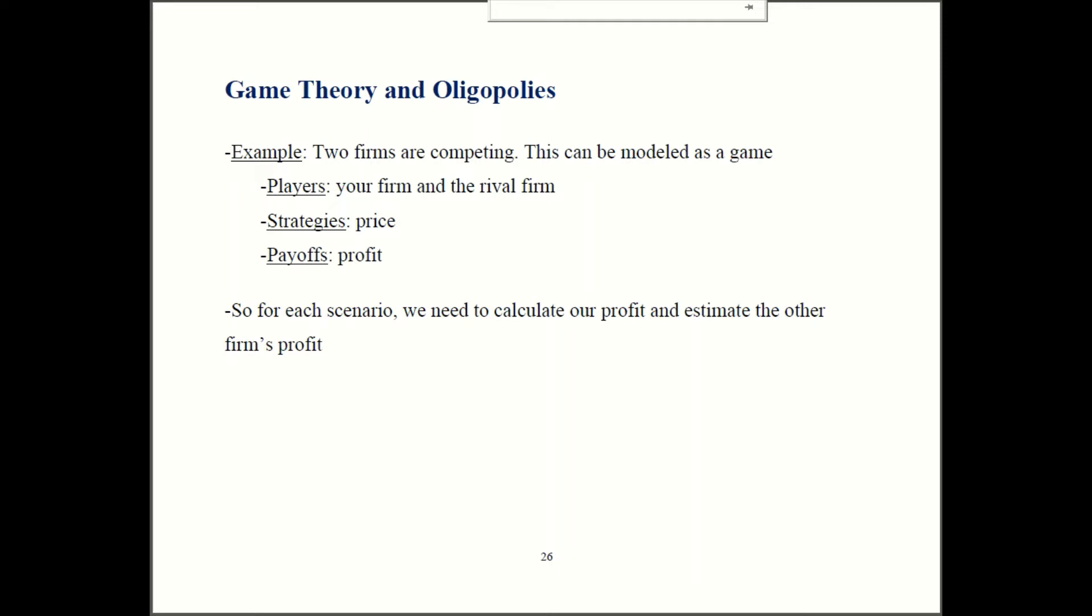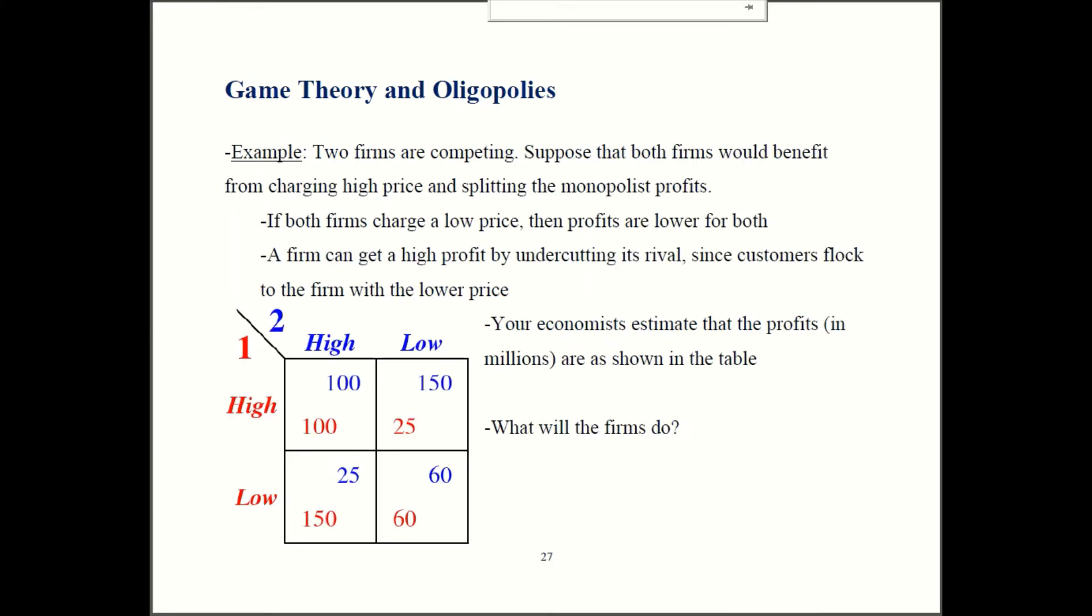So for each possible case for what our price will be and what their price will be, we have to estimate each firm's profits and then based on that we can use game theory and try to find if there's a dominant strategy or if there is a Nash equilibrium. So to keep things very simple, let's say there's two firms with two possible prices, high and low. Now to be clear, our tools of game theory do apply further when you have three or more firms with three or more options each. We're just trying to keep things very simple here so you get the basic ideas.